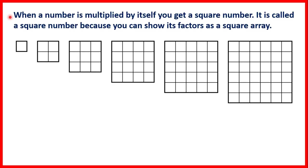When a number is multiplied by itself you get a square number. It is called a square number because you can show its factors as a square array. So here we have one square. Here we have four squares because two times two is four. Here we have nine squares because three times three is nine.